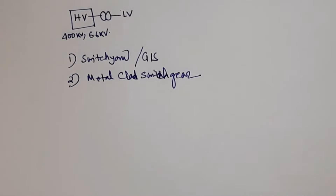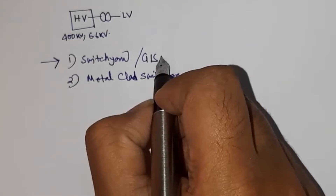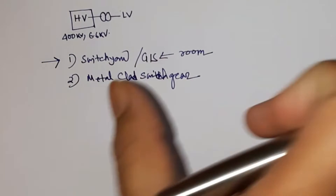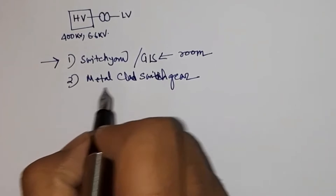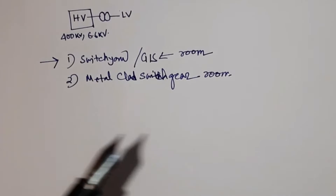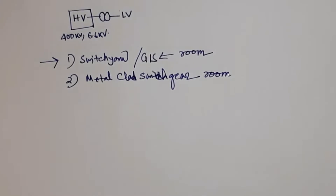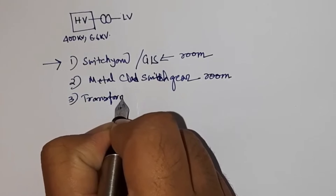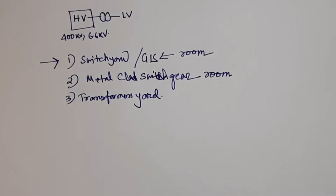So a substation shall consist of the following: if it is outdoor there shall be a switchyard; if it is GIS then there shall be a GIS room. A substation should have a switchyard or GIS if it has an extra high voltage system of 66 kV and above. Then it shall have a metal-clad switchgear room for installation of switchgears, which can be in the range of 3.3 kV, 6.6 kV, 11 kV, 33 kV, or 415 V. Then there shall be a transformer yard where outdoor oil-type transformers will be kept.